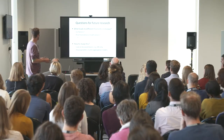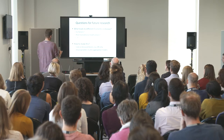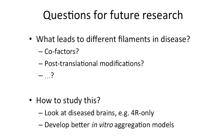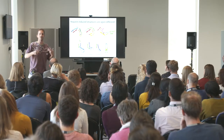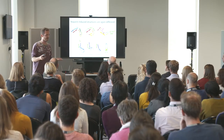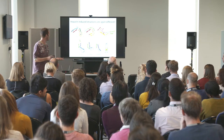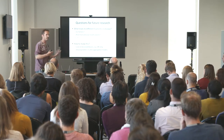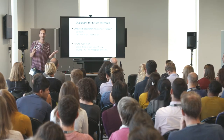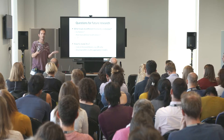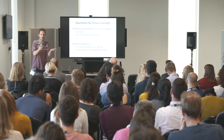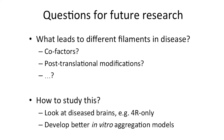This raises the question: what leads to these different filaments in disease? Heparin acts as a cofactor to make certain structures. Are there different cofactors in disease that help tau? Or is tau itself modified? Post-translational modifications of tau might make chemically different tau in each of the diseases. All these things need to be studied.